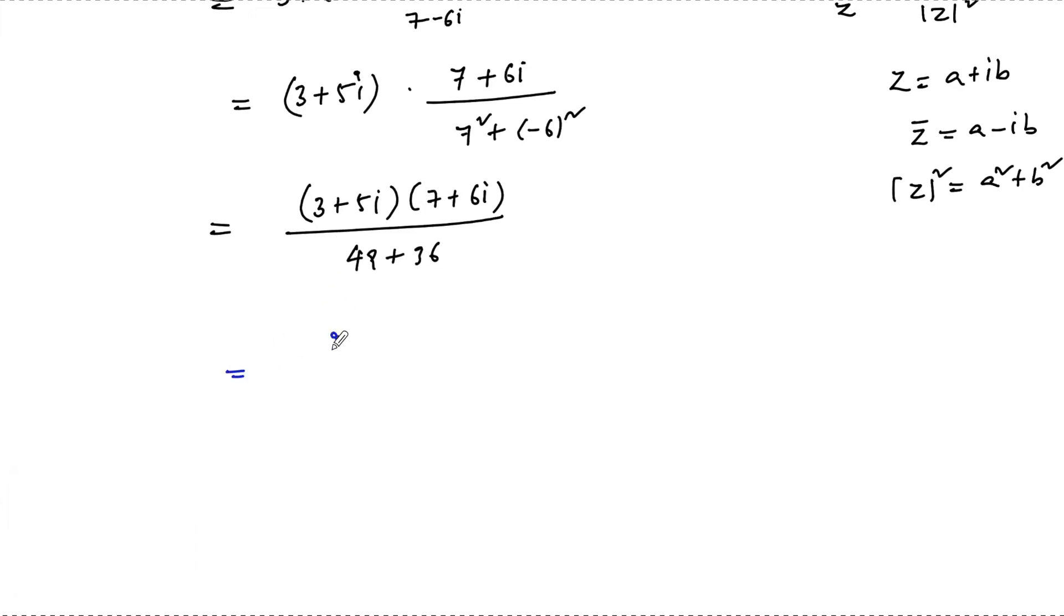Let's multiply: 7 × 3 = 21, 5 × 6 = 30, 7 × 5 = 35, and 6 × 3 = 18i. This gives (21 - 30) + (35 + 18)i.